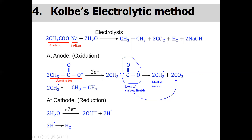The negative charge is converted into a radical. This electron and another electron combine together to release carbon dioxide and generate the methyl radical. These two methyl radicals ultimately combine together to give the corresponding alkane (ethane in this case).